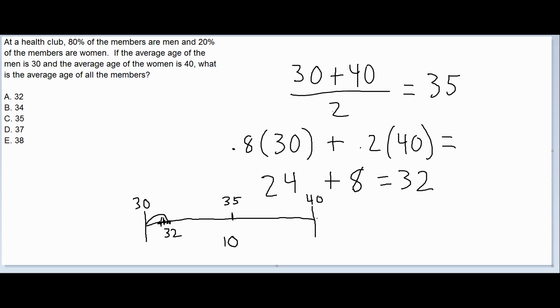Or we could look at it from the women's perspective. If you start with just the women, a group of 40-year-old women, and then you add enough 30-year-old men so that they make up 80% of the group, then that's going to pull it 80% away from the women's average. And 80% of 10 is 8, so it'll pull it 8 away from 40 down to 32.